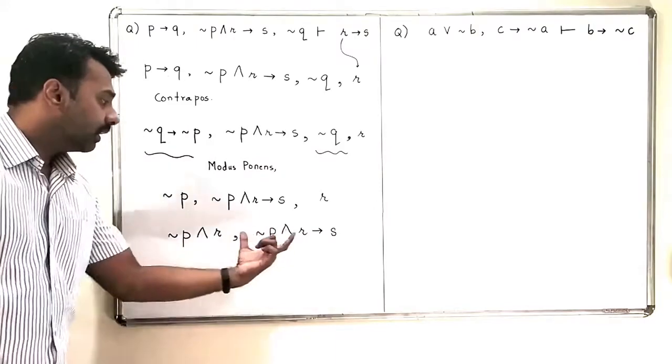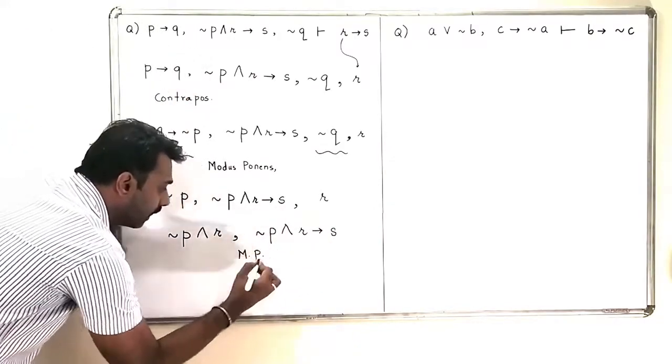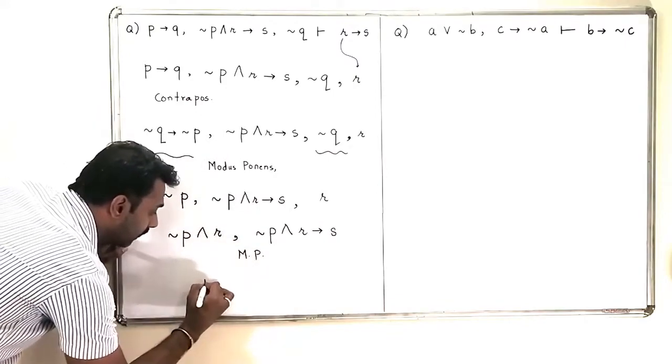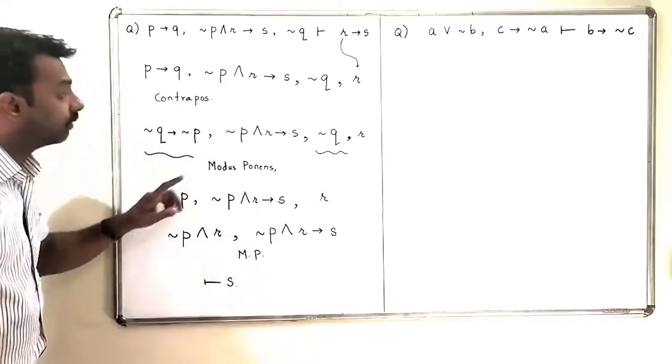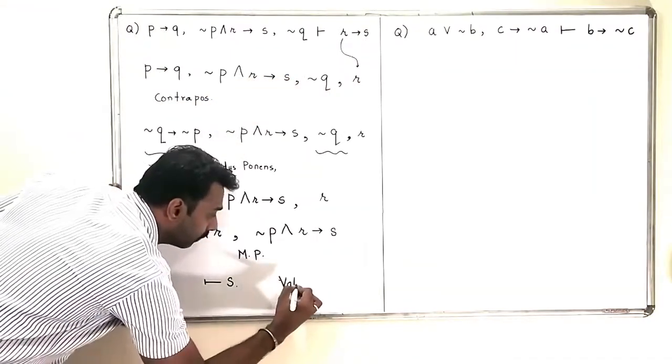I can apply modus ponens here. Negation P and R, negation P and R implies S. So, by modus ponens again, I am going to get it as S. This is what we were expecting S. So, this argument is a valid argument.